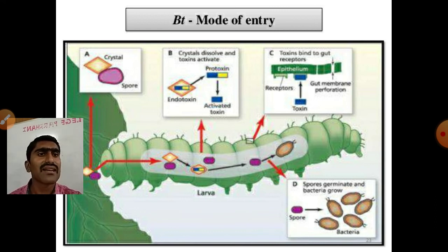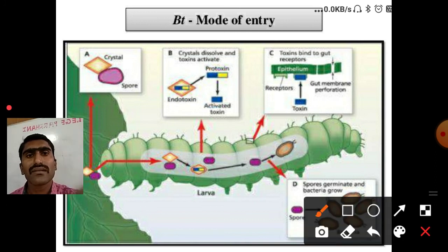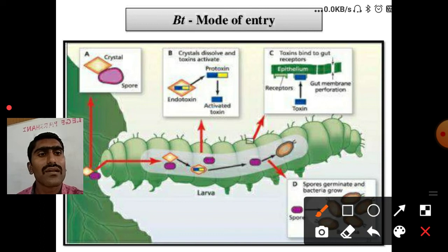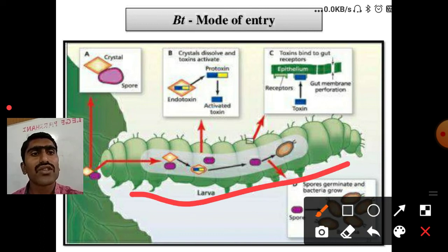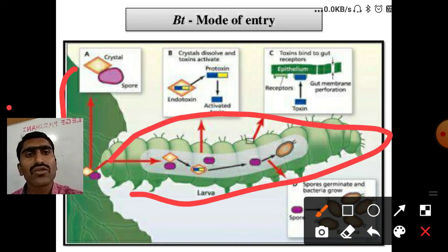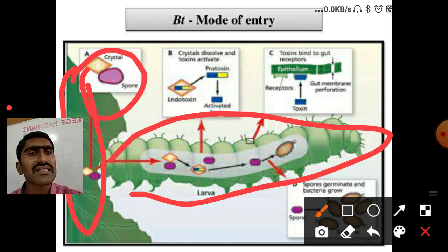This diagram shows the complete mechanism. The pink bollworm is shown eating the cotton leaf, and as the crystal protein enters the gut, it acts on the inner lining. More than 100 variations of Bt toxin have now been identified.